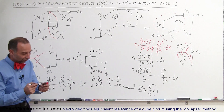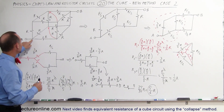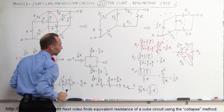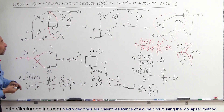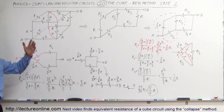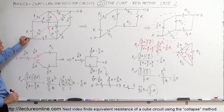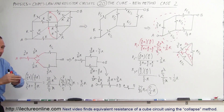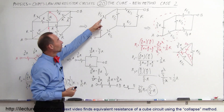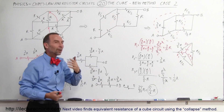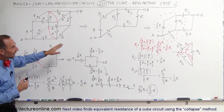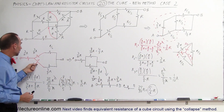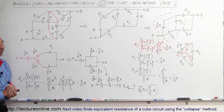So the equivalent resistance of this cube circuit — where we take the endpoints to be here and diagonally across the opposite corner — is 5/6 R. Quickly reviewing what we did: we collapsed a 3D cube circuit into a 2D circuit because of perfect symmetry. Wherever we collapsed resistors together, that's like having two resistors in parallel, giving half the resistance. We ended up with five R/2 equivalent resistors, then used the delta-to-Y conversion to reach a circuit that's much easier to solve.